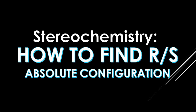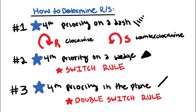It's Lexi, and in this video on stereochemistry, I'll be talking about how to find R and S. There are three different scenarios that you might encounter when you're trying to determine R and S: the first is when the fourth priority is on a dash, the second is when the fourth priority is on a wedge, and the third is when the fourth priority is in the plane.